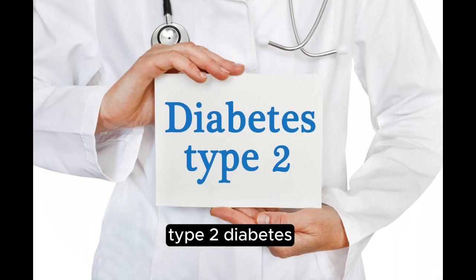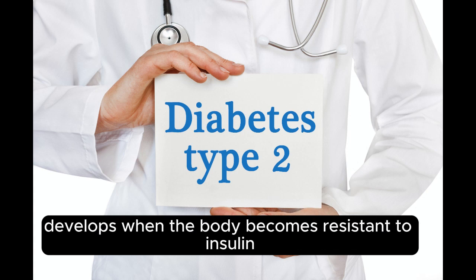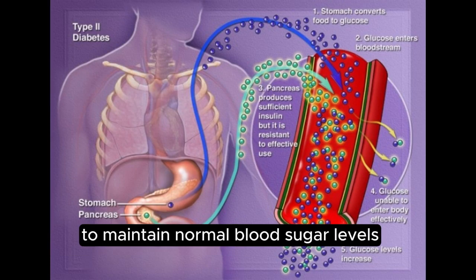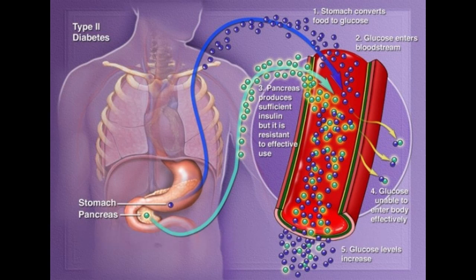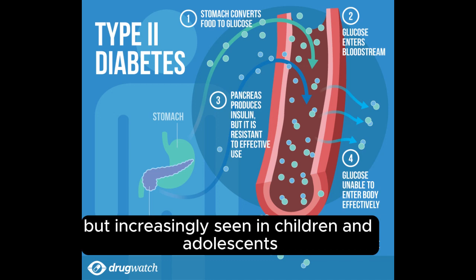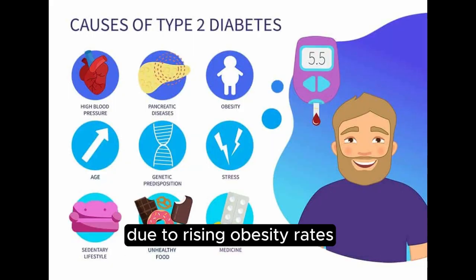Type 2 diabetes develops when the body becomes resistant to insulin or doesn't produce enough insulin to maintain normal blood sugar levels. It is most commonly diagnosed in adults, but increasingly seen in children and adolescents due to rising obesity rates.